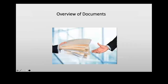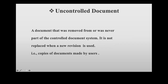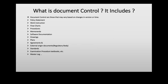There are two types of documents: controlled and uncontrolled. A controlled document is always at the latest version level, and whenever a change is made it is retrieved and replaced. An uncontrolled document is a document that was removed from, or was never part of, the controlled document system. It is not replaced when a new revision is issued — that is, copies of documents made by the user. Document control covers those documents that vary based on changes in version or time.